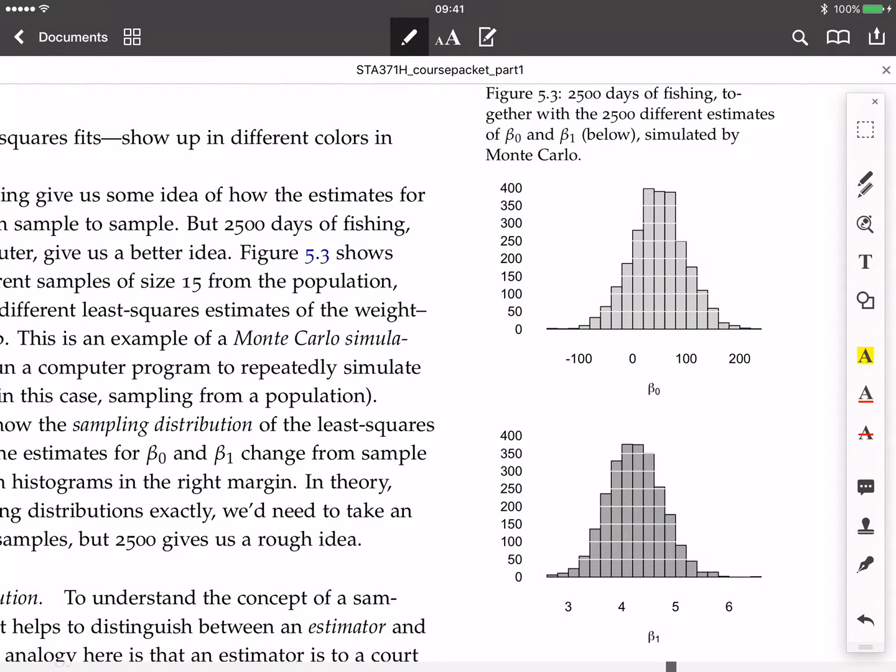And the sampling distributions for the intercept and the slope are shown in this picture right here. So in this picture labeled beta naught, we have the sampling distribution of the intercept. And in this picture labeled beta 1 in the bottom panel, we have the sampling distribution of the slope.